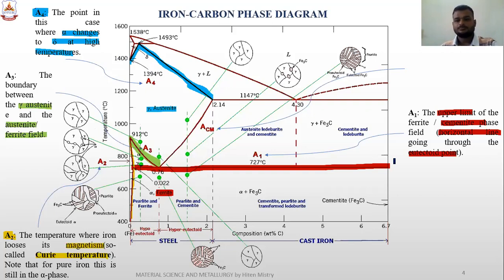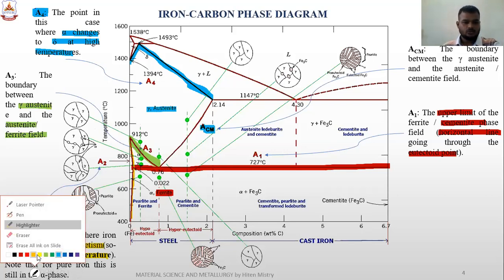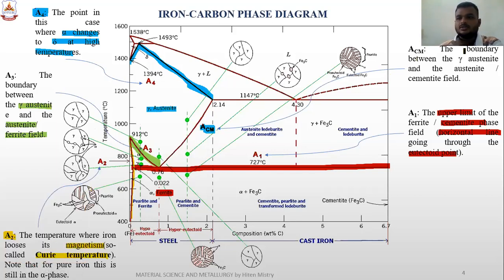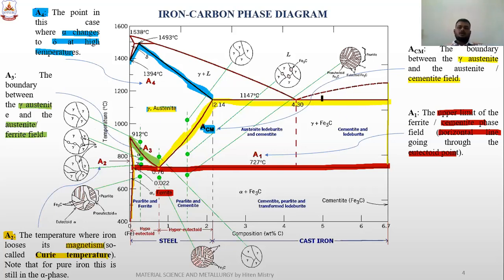The next point is ACM. ACM is the boundary between the austenitic structure and the austenitic-cementite field. Where is the austenitic-cementite field? First it is an austenitic structure, and this is your cementite field. This is the region of ACM structure. So this is the line and formation of the iron-carbon diagram.